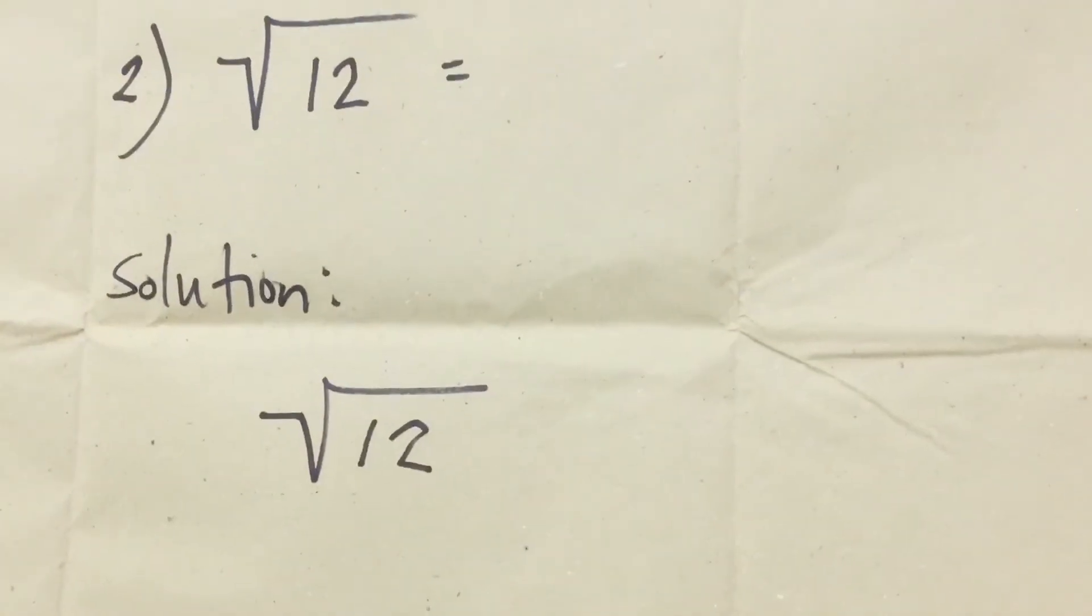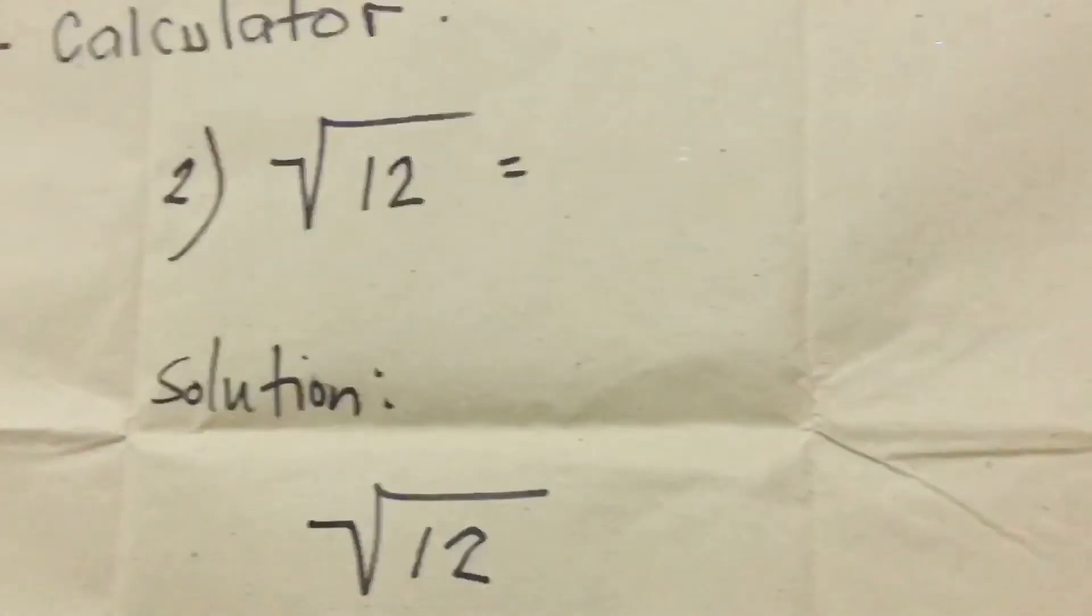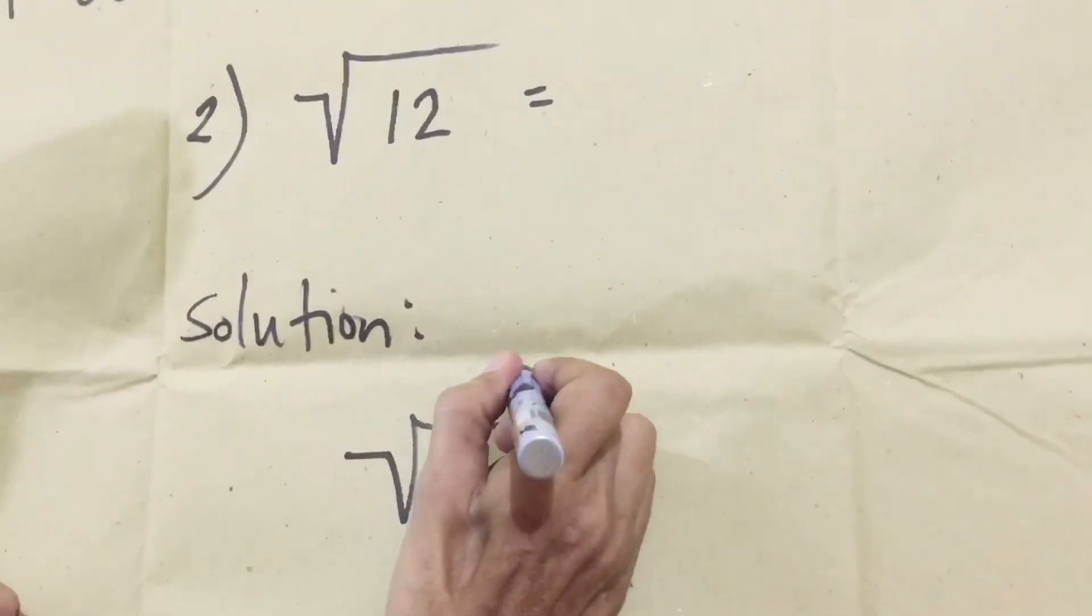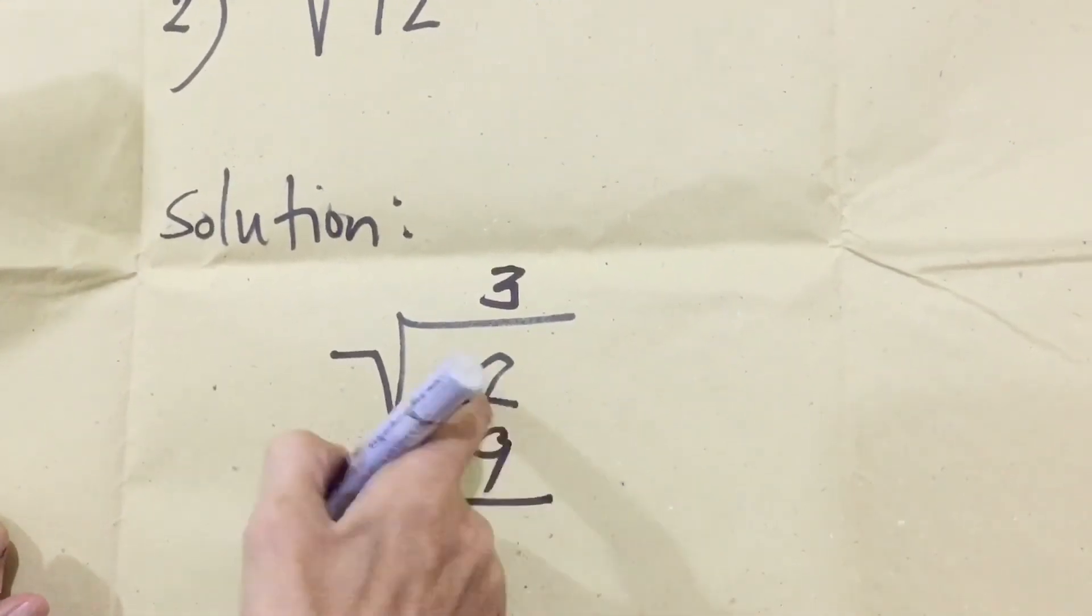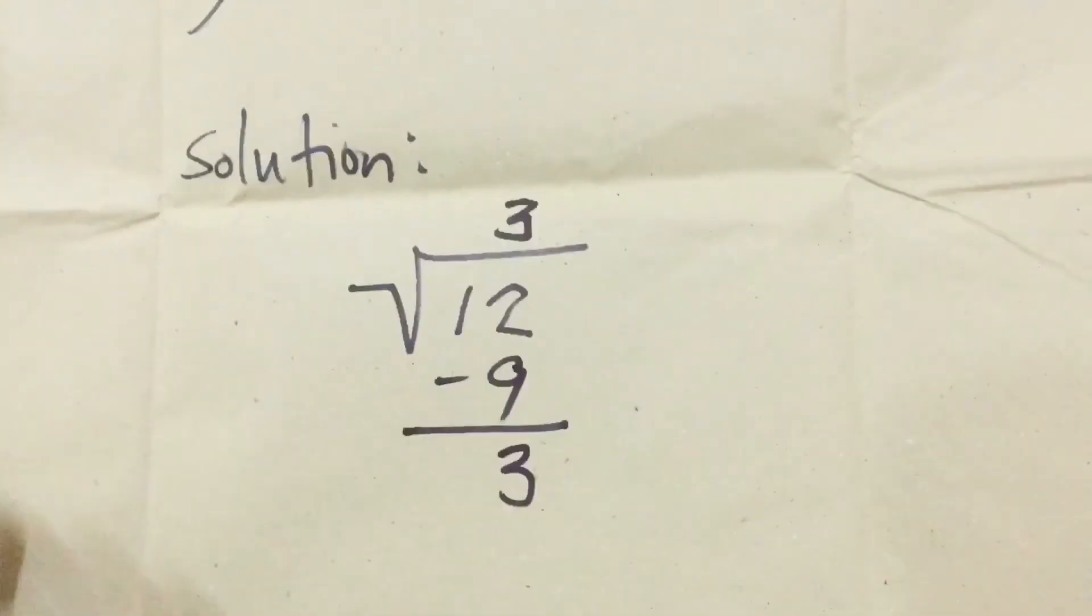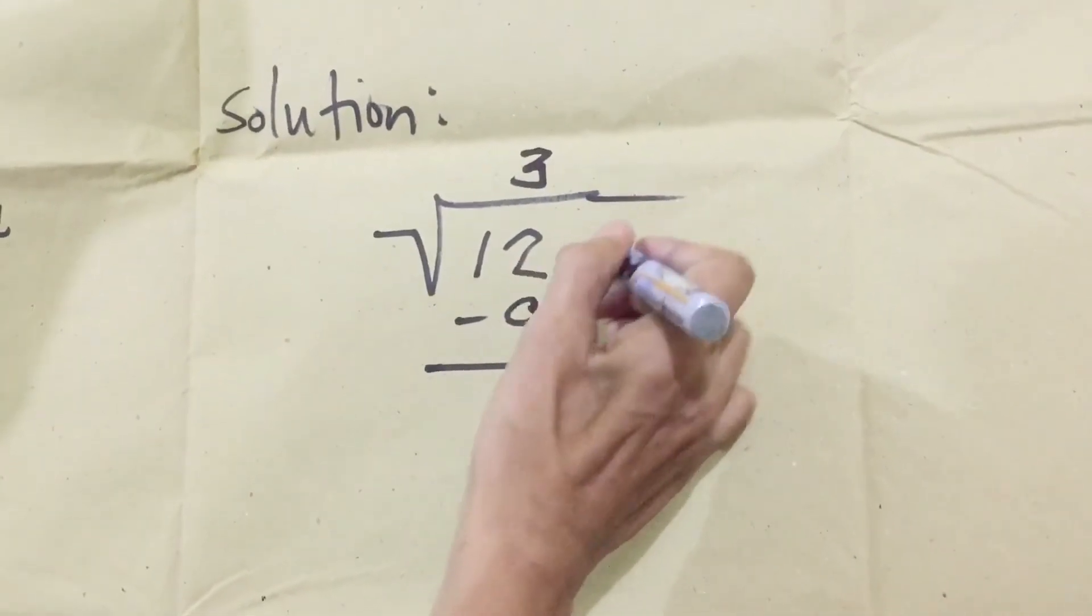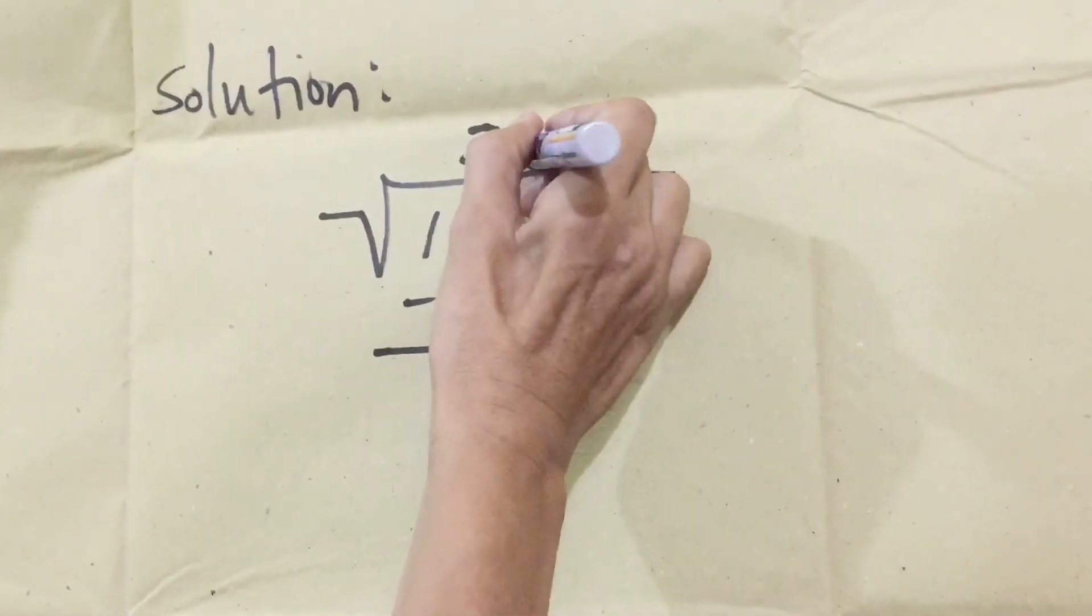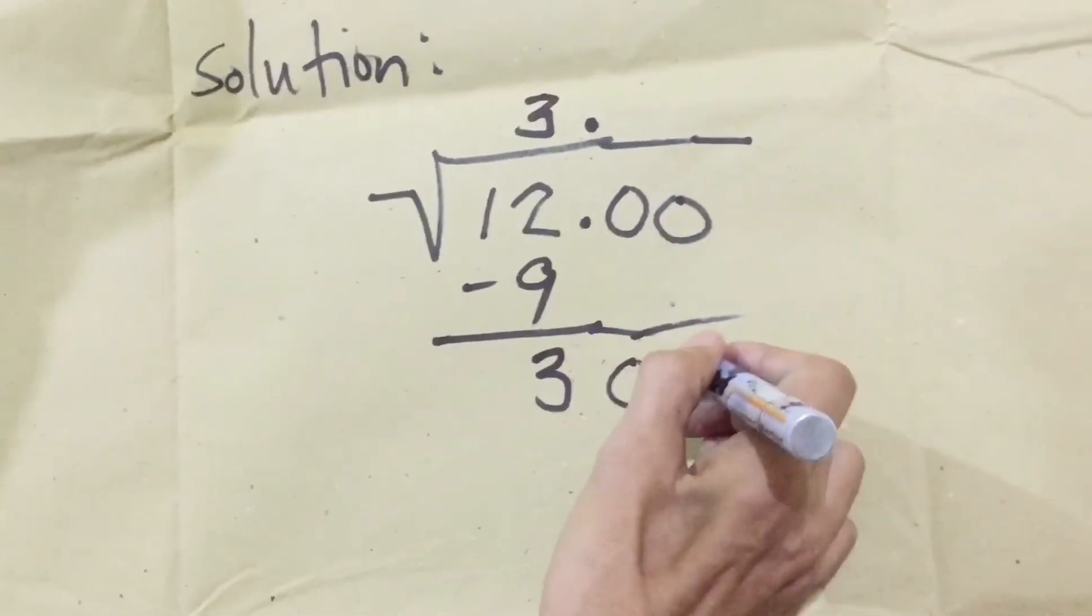Number two example: square root of twelve. We have to solve what is the square root of twelve. Again, we need to estimate by squaring. Three times three is nine, four times four is sixteen. So it fits three times three equals nine. Three times three equals nine. Minus twelve minus nine is three. Next, for borrowing, we need two zeros. In normal division, we borrow just one. Now, since it's square root, we borrow two zeros. So we put a point on top. Then bring down the zeros. Three hundred now.